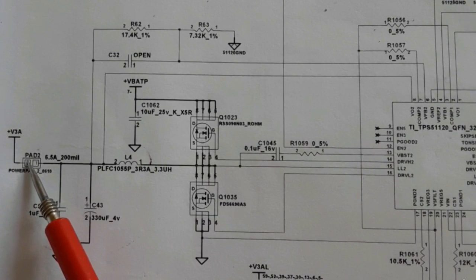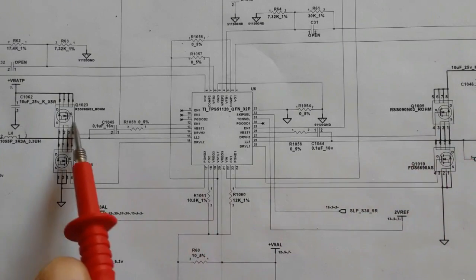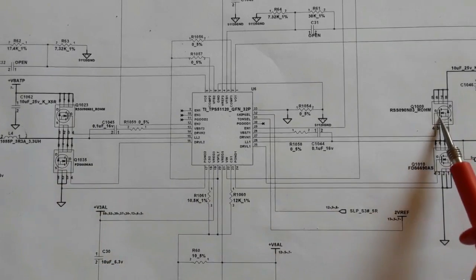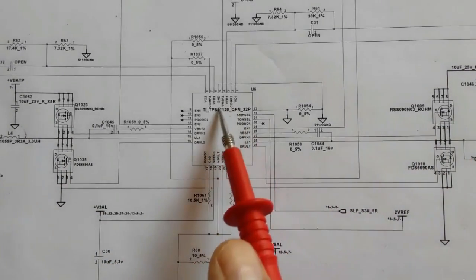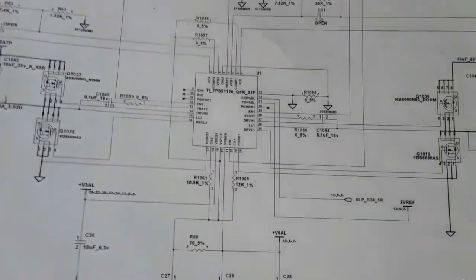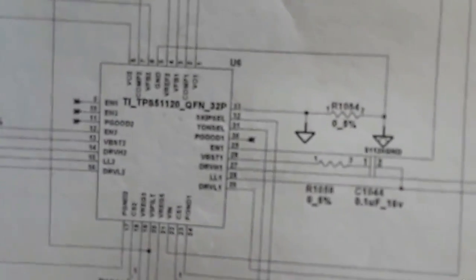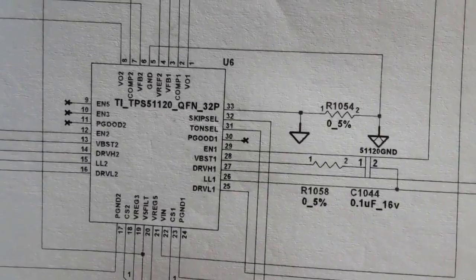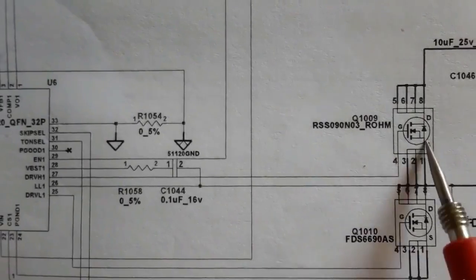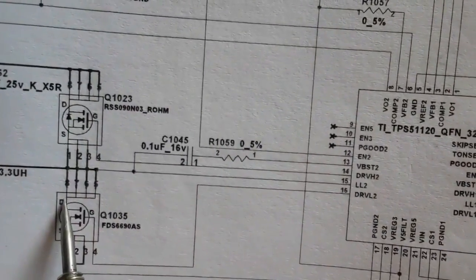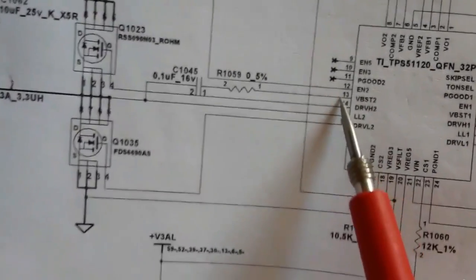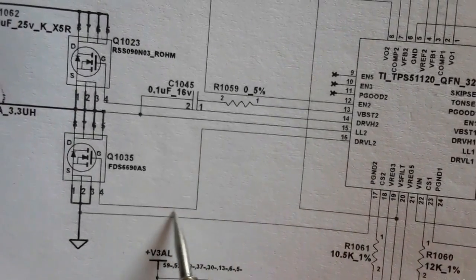For the MOSFETs to be activated, they must receive a control signal at their gates from the power management IC. This control signal is called the drive signal. For the 5-volt channel MOSFETs, we have drive-high-1 and drive-high-2. For the other MOSFETs, we have drive-high and drive-low signals for both MOSFETs.